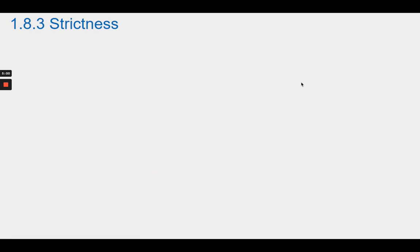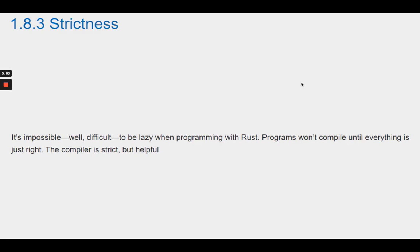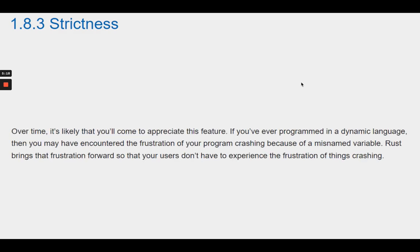Section 1.8.3 Strictness. It's difficult to be lazy when programming with Rust. Programs won't compile until everything is just right. The compiler is strict, but helpful. Over time, it's likely that you'll come to appreciate this feature. If you've ever programmed in a dynamic language, you may have encountered the frustration of your program crashing because of a misnamed variable. Rust brings that frustration forward so that your users don't have to experience the frustration of things crashing.